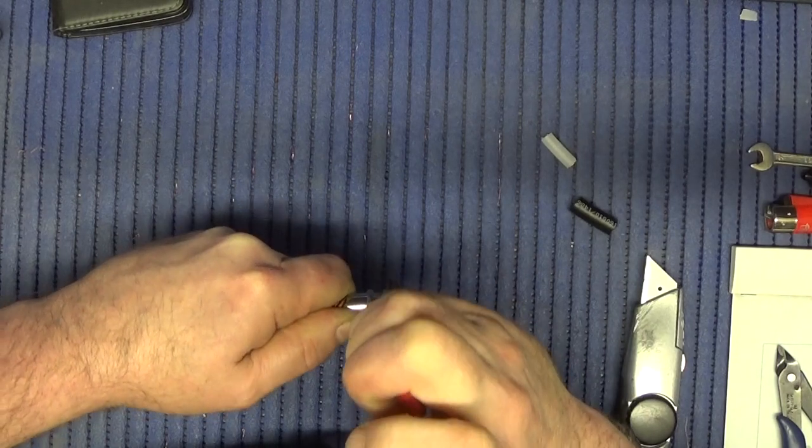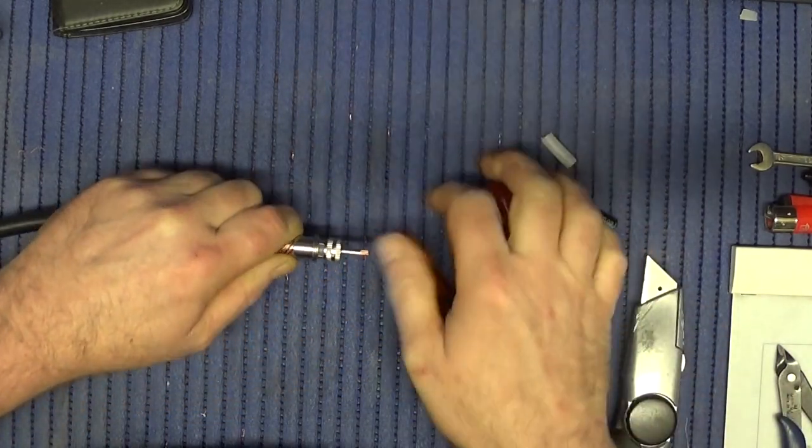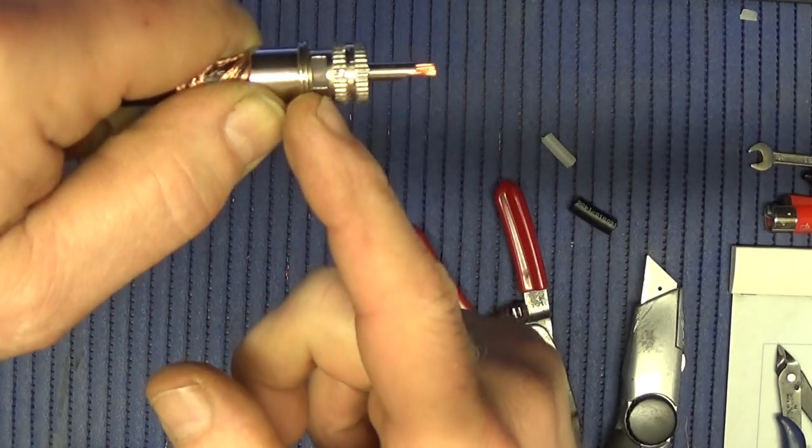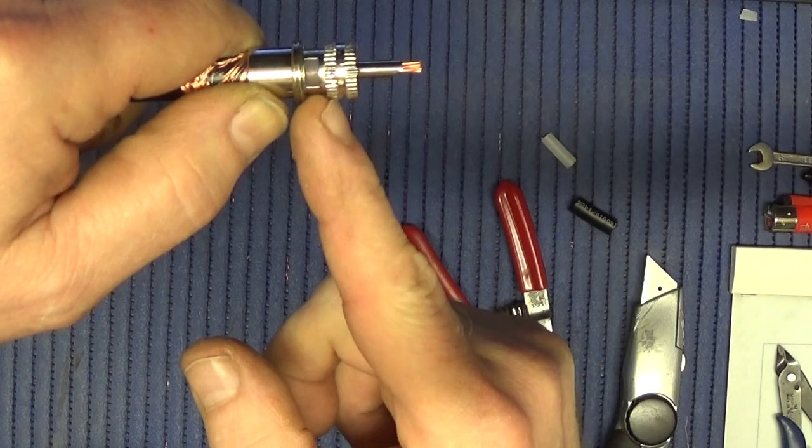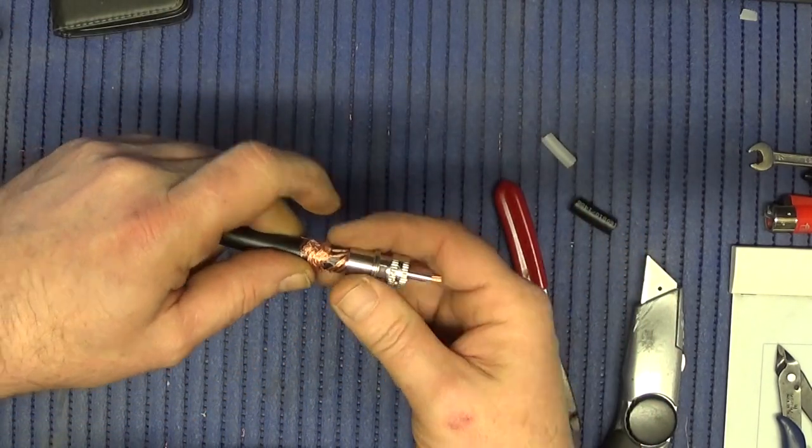Nearly there, just one more turn on that. You can just see in there now that the white piece has come through and it's just touching here on the front piece, and then we're left with the braid on here.